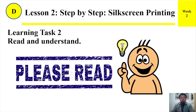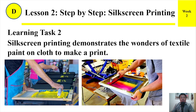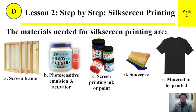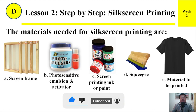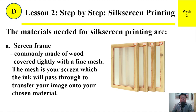Learning Task Number 2. Read and understand. Silkscreen printing demonstrates the wonders of textile paint on cloth to make a print. The materials needed for silkscreen printing are: A. Screen frame — commonly made of wood, covered tightly with a fine mesh. The mesh is your screen which the ink will pass through to transfer your image onto your chosen material.